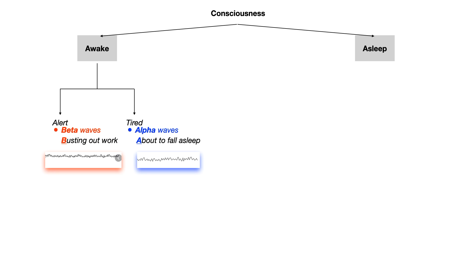Beta waves are for when you're alert and awake, giving conscious mental energy - this is how you feel after a cup of coffee studying for your test. Alpha waves are for when it's 3:30 or 4 p.m. and you're starting to think about taking a nap. What you see beneath the beta and alpha wave labels is what those actually look like on an EEG. Again, if you're alert you have beta waves because you're busting out work, and if you're tired you have alpha waves because you're about to fall asleep.